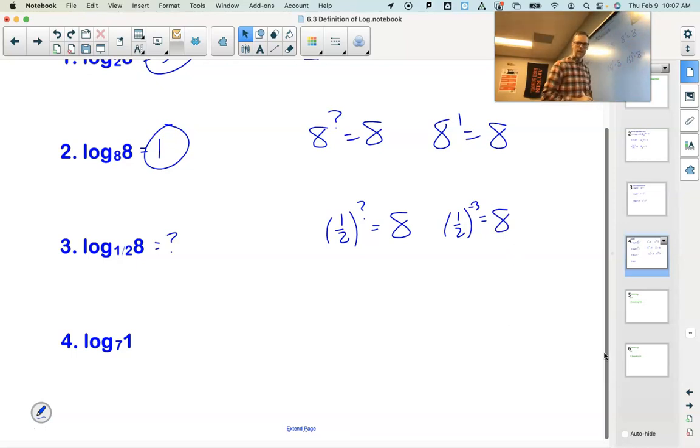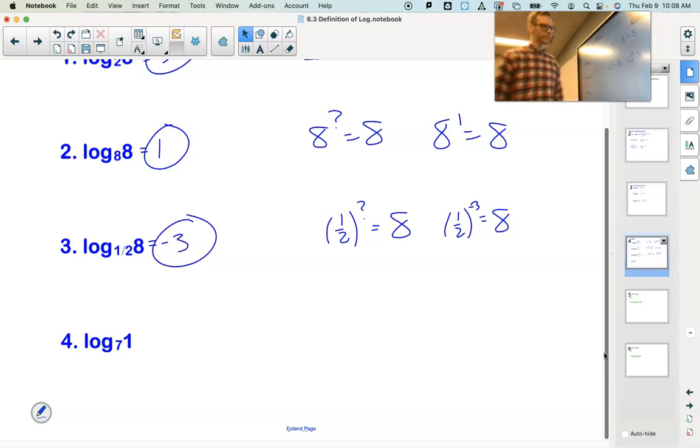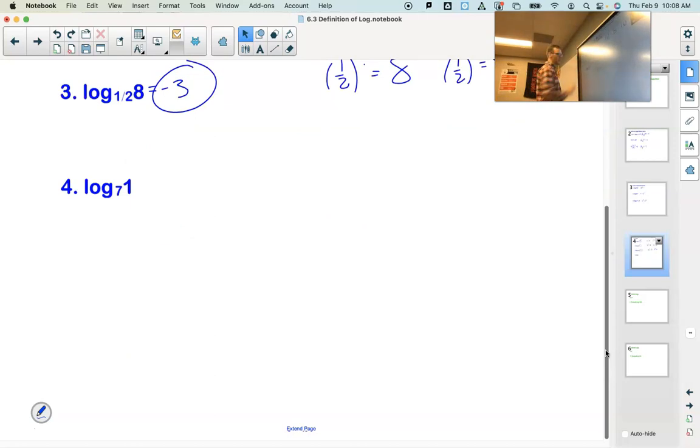Well, 1 half to the negative third. That negative is going to flip this fraction. It's going to be 1 eighth to the negative first. And that's going to be 8. If you need to flip a fraction, we use a negative exponent. So the log base 1 half of 8 equals negative 3.